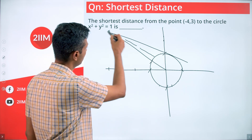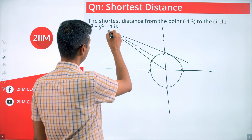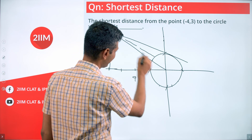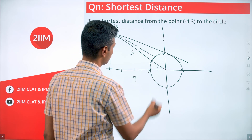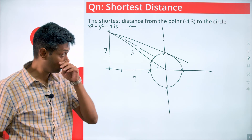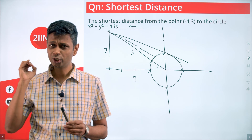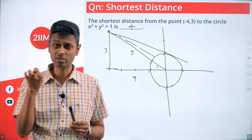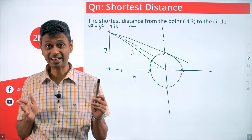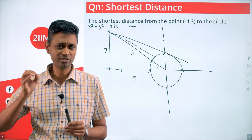So join to the center and find this distance. This is 3 units, this is 4 units, so this straight line (hypotenuse) is 5. The radius is 1, so the shortest distance is 5 minus 1 = 4. Actually a very simple question! From a point outside a circle, the shortest distance is found by joining to the center — wherever that straight line hits the circle, that is the shortest point.